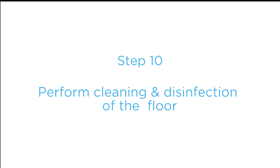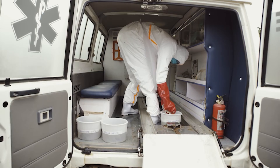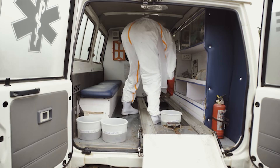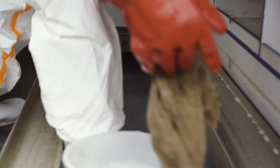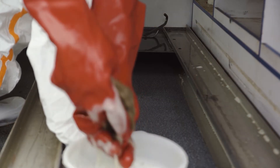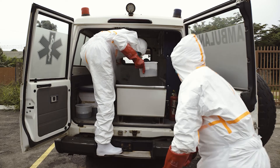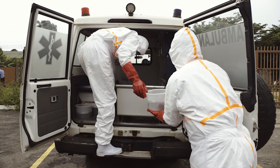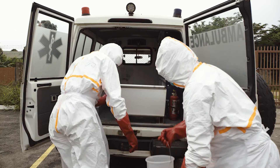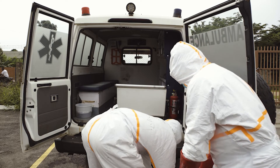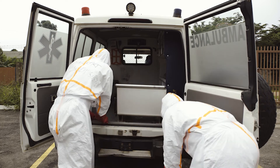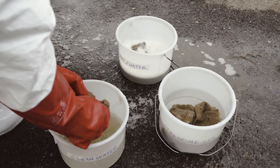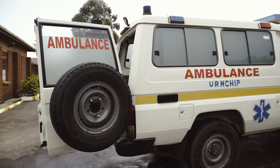Step ten: perform cleaning and disinfection of the floor. Clean the ambulance floor using the same unidirectional procedure, starting from the end of the ambulance to the front door, using separate buckets and newly prepared solutions. First, clean with soapy water. Second, rinse with clean water. Third, disinfect with chlorine 0.5%. After a contact time of 10 minutes, remove the chlorine residue with clean water. Lastly, let air dry.